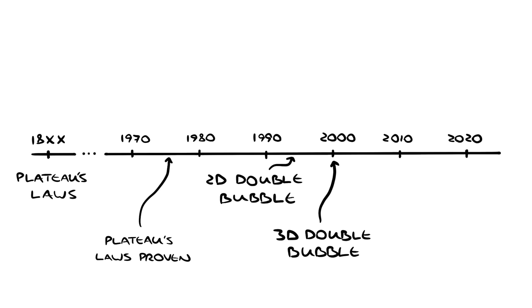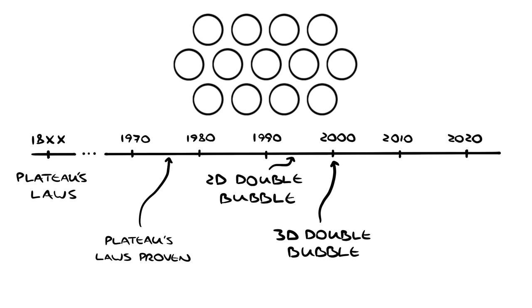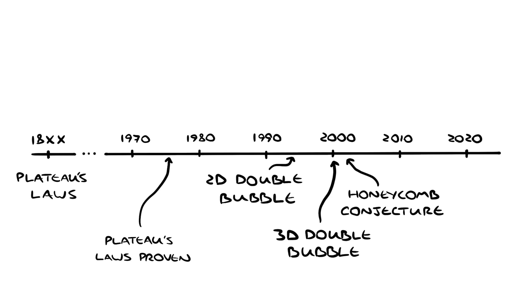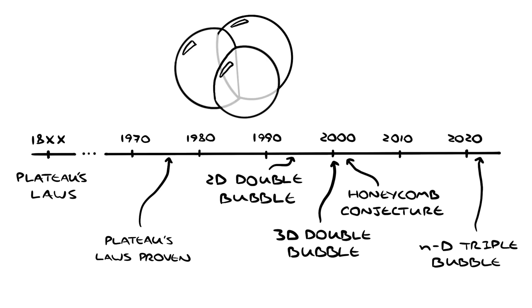A closely related problem is the case for infinite bubbles that all have the same area in two dimensions, in other words, a honeycomb. The fact that a honeycomb is the lowest perimeter way to arrange a number of volumes wasn't proven until 2001. Just last year, in 2022, mathematicians proved the triple bubble problem in three dimensions and higher.